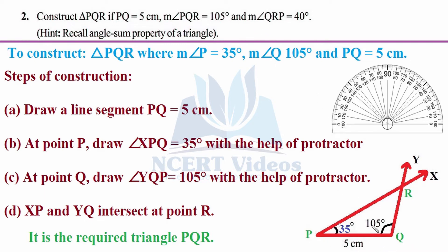Steps of construction are the same as before. First, draw a line segment PQ of 5 centimeters with P and Q as endpoints. At point P, draw 35 degrees using a protractor: place the reference point at P, align the zero-degree line along PQ, and mark 35 degrees — draw line PX. At point Q, draw 105 degrees: place the protractor reference at Q, align along PQ, and read the exterior scale — 105 degrees falls there.